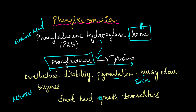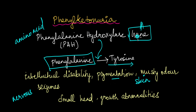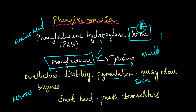It also affects the bones and ligaments, which is why people with phenylketonuria often have a small head and exhibit growth abnormalities. So you see, this is a single gene — the gene that codes for phenylalanine hydroxylase — and a mutation in it doesn't cause just one effect but a multitude of effects.